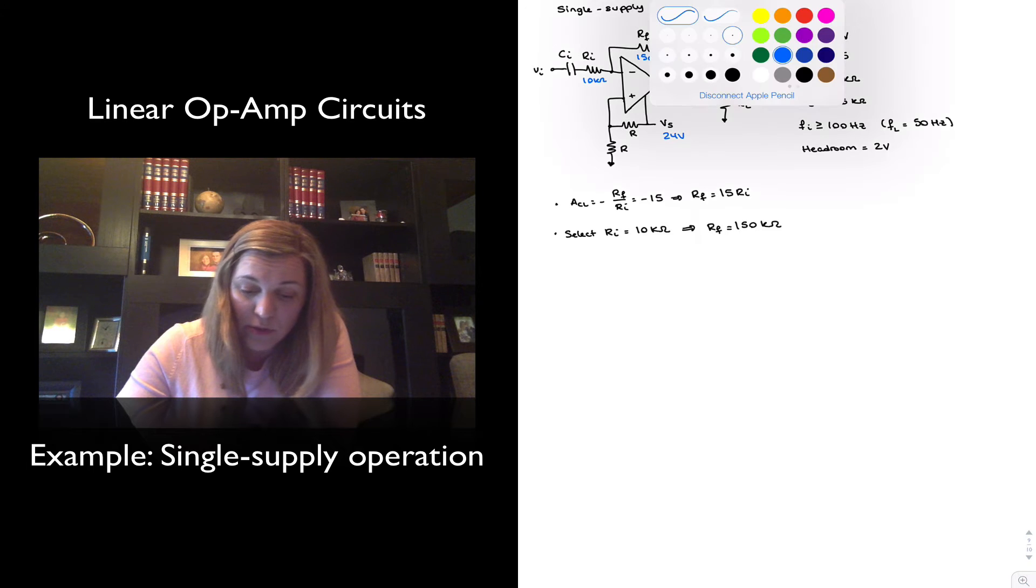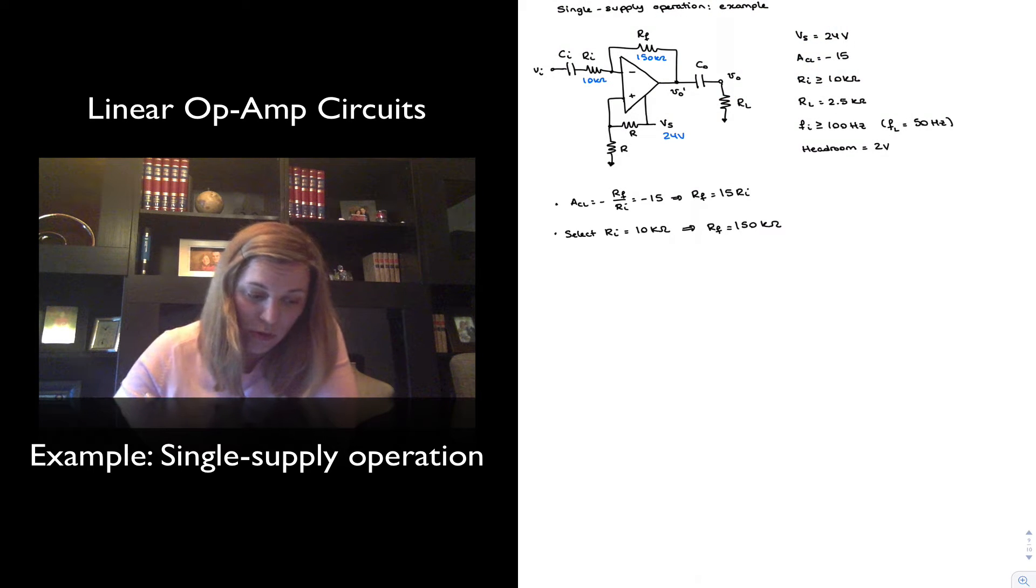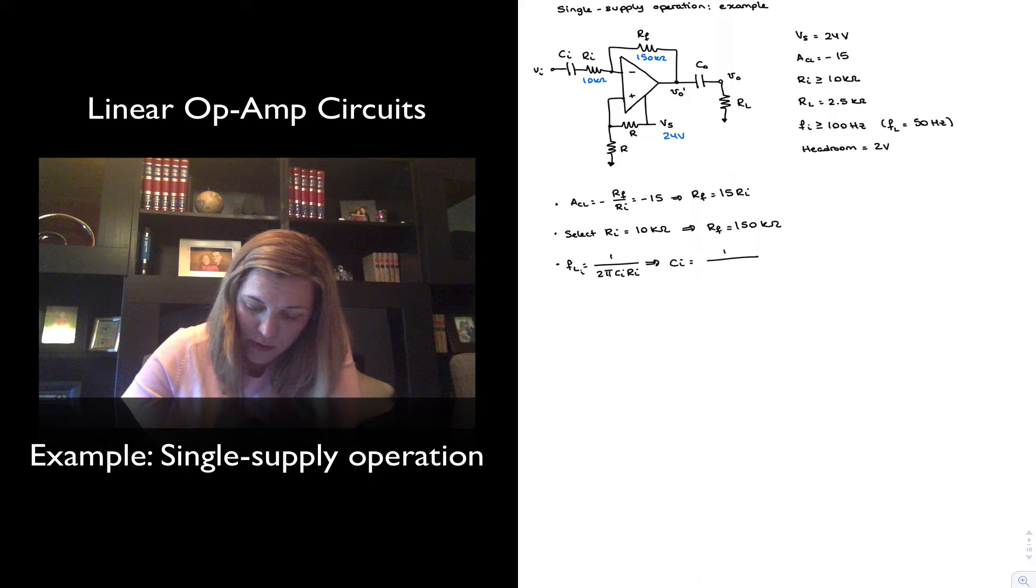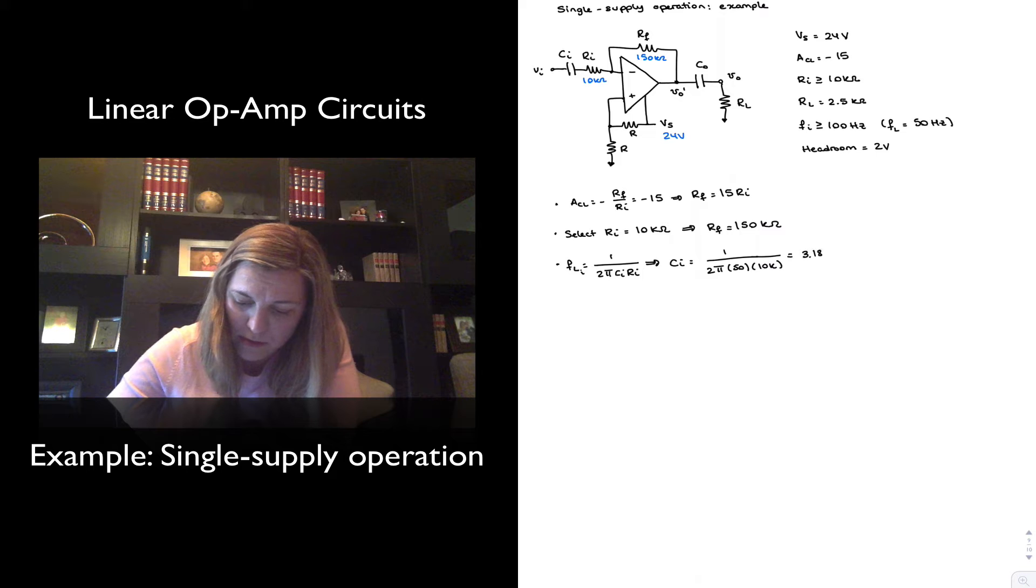Let's go ahead and select the value of the capacitors. And again, let's assume that we wanted to set our low corner frequencies to 50 Hz, both at the input and output high-pass networks. So FL at the input, this will be 1 over 2π CI times RI. And so I can calculate the value of CI, which will be 1 over 2π times FL, which I just said is 50, times RI, which is 10 kΩ. And I will get 3.183 μF. And so let's imagine that I just chose 3.3 μF.